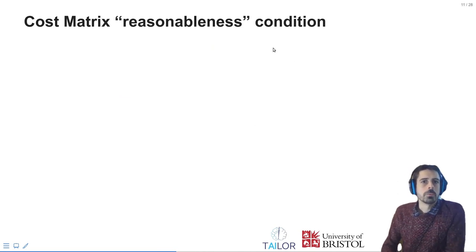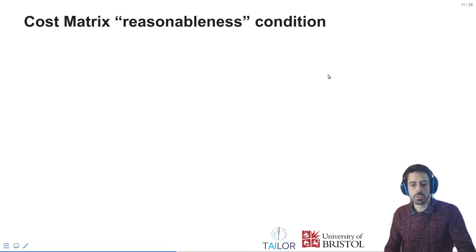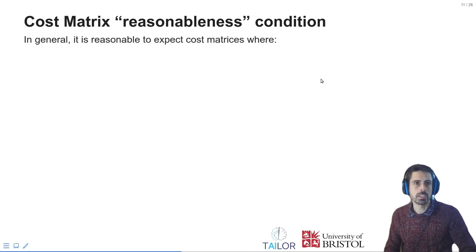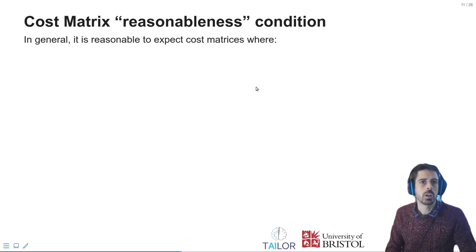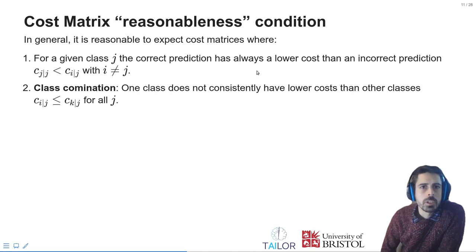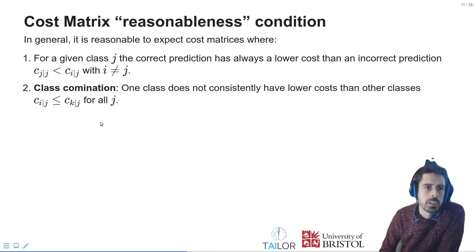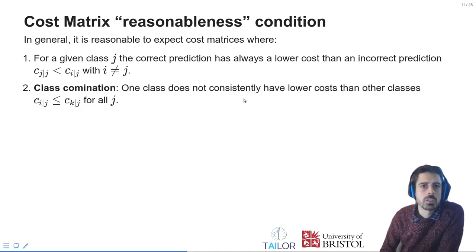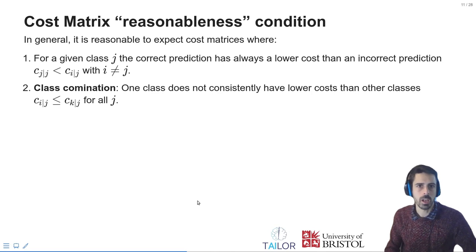What are some reasonableness conditions for cost matrices? We generally have two conditions. First, for a given class j, the correct prediction always has a lower cost than an incorrect prediction — this is a reasonable condition and is satisfied by the matrix we have seen. Second is class domination: one class should not consistently have lower cost than other classes, because if one class always has lower cost for every possible outcome, we would always select that class.